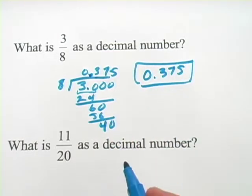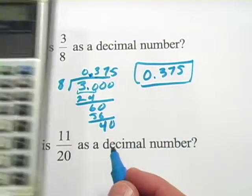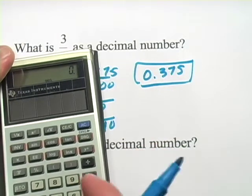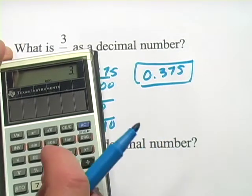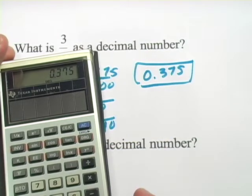Now we did that by dividing. If you can use a calculator, that makes it a lot easier. You simply take the top number, hit the divide button, hit the bottom number, and you've got it, .375.